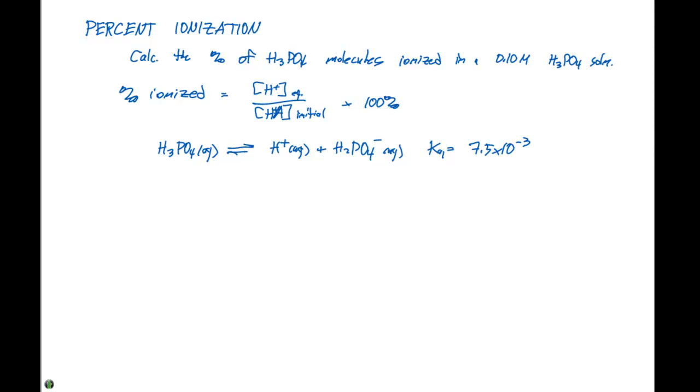Remember, if we have a polyprotic acid, the concentrations of everything are dictated by Ka1, since it's much larger than Ka2 and Ka3. So we don't need to go into any in-depth calculations with H2PO4 and HPO4. We can just set up an ICE table with this particular reaction.